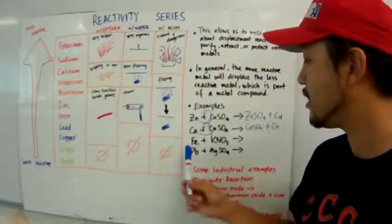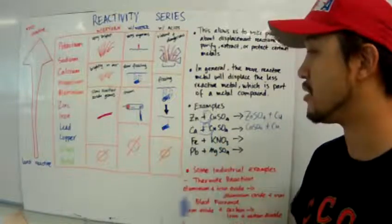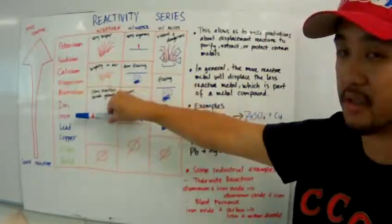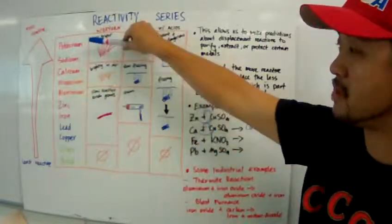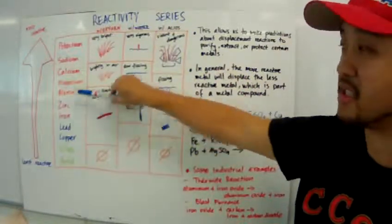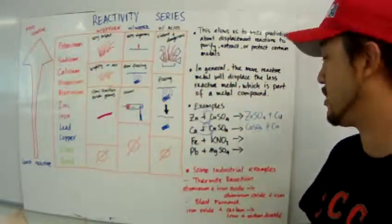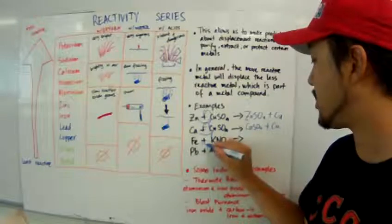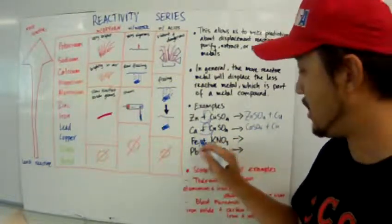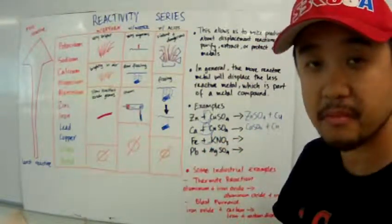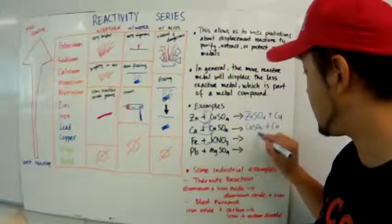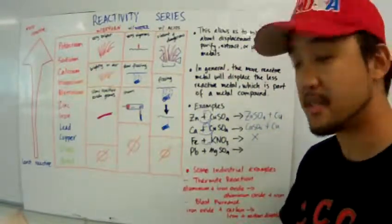Now, let's compare another one. Iron and potassium nitrate. Iron is all the way down in the middle here. Potassium is all the way up there. Iron is less reactive than potassium. So, when you put iron and potassium nitrate together, will iron displace the potassium? No, because iron is less reactive than potassium.